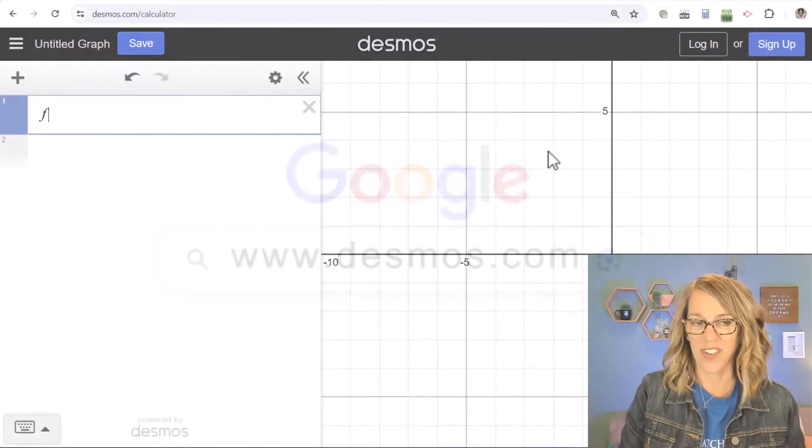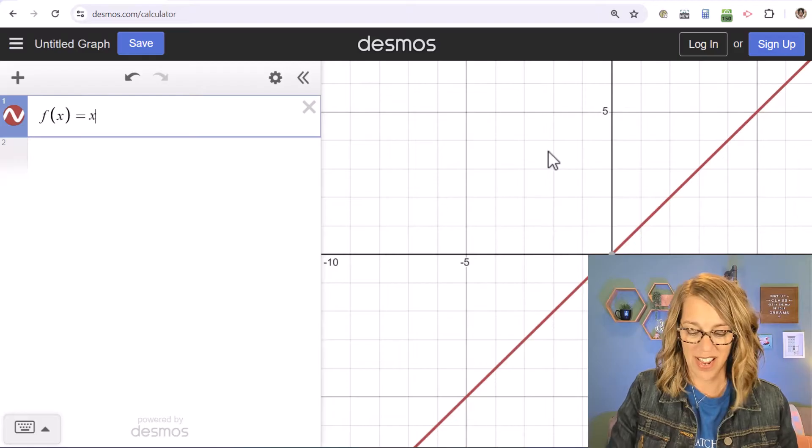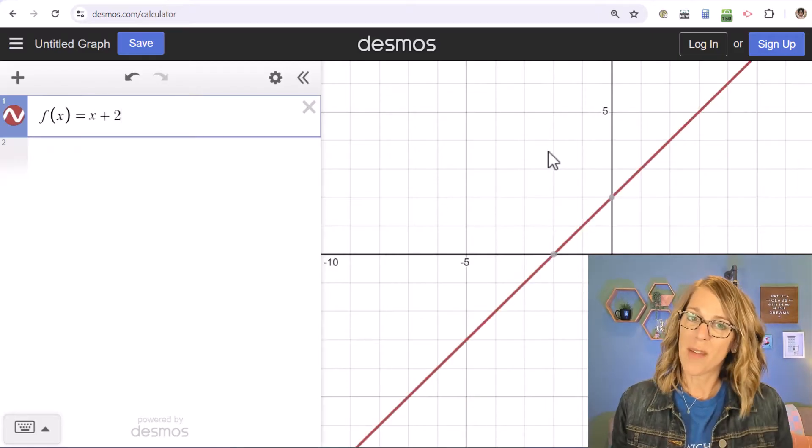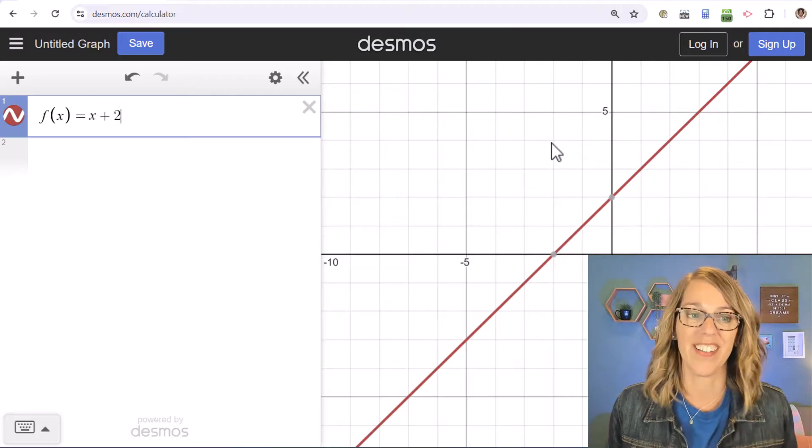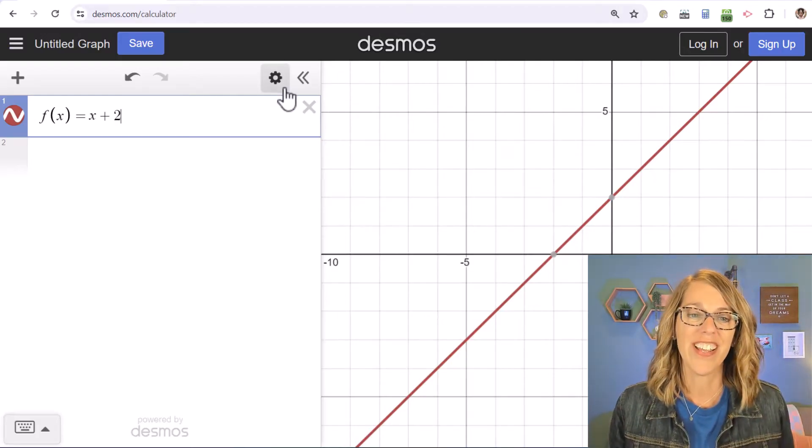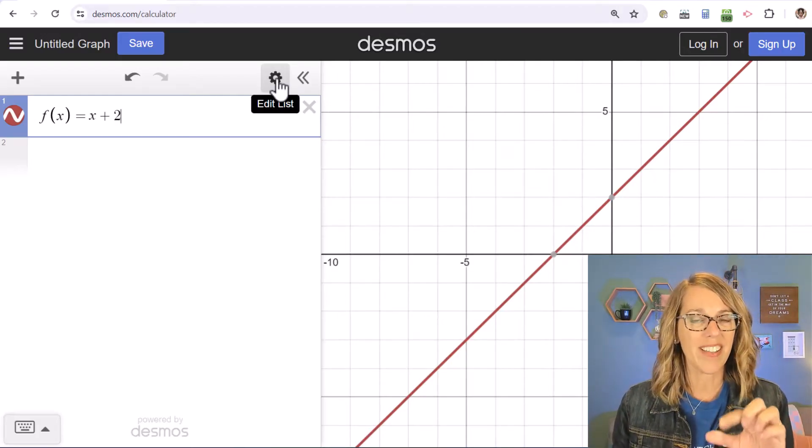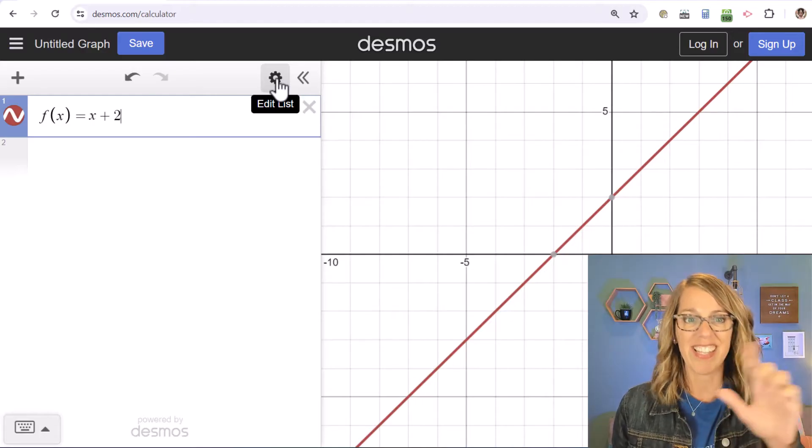Let's go ahead and put a function in like f of x equals x plus two. So I've got my line there, but I want a table that represents the points on this line or the solutions here. To do that, I'm going to click on this edit list, the settings gear.